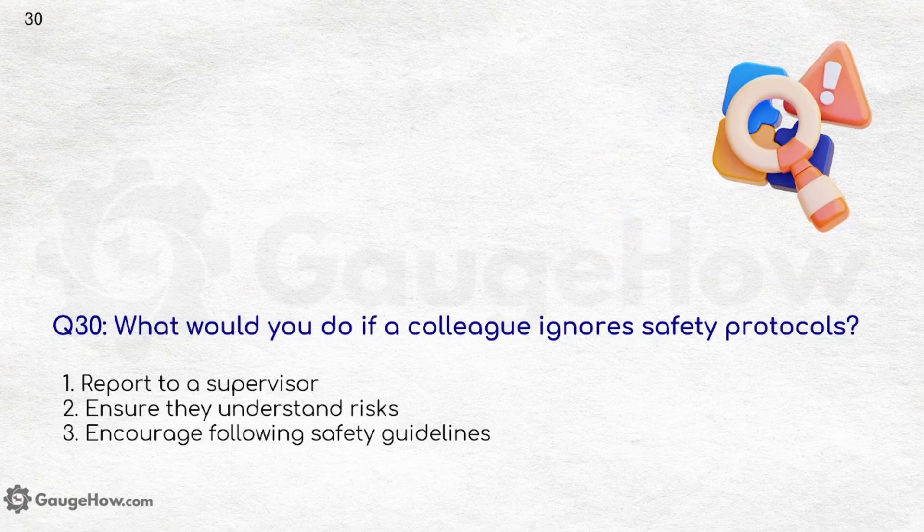What would you do if a colleague ignores safety protocols? Report to a supervisor, ensure they understand the risks, and encourage following safety guidelines. No matter who your colleague is, you always have to ensure that risks are given more importance than friendship, and that they follow all necessary safety guidelines.